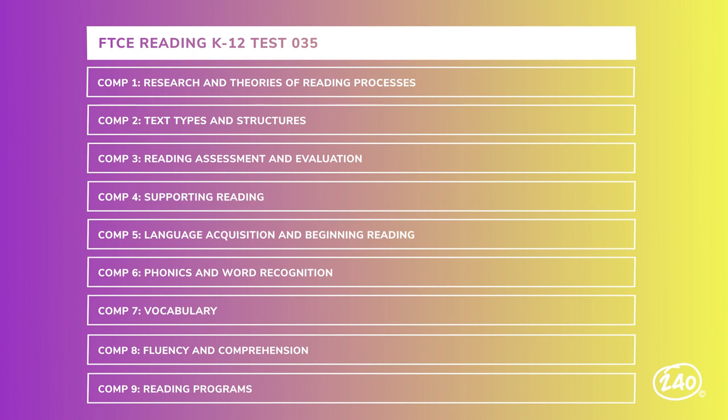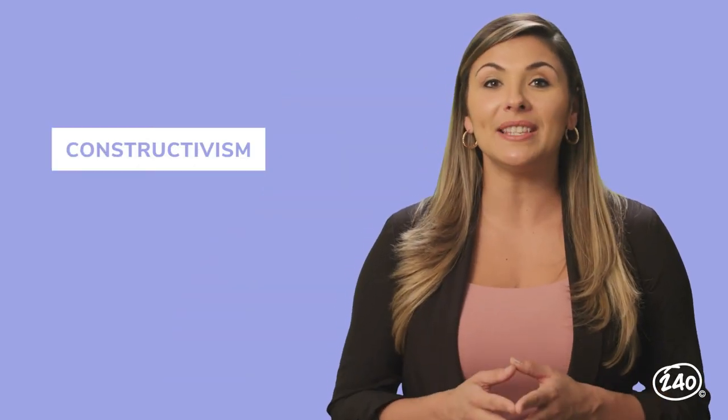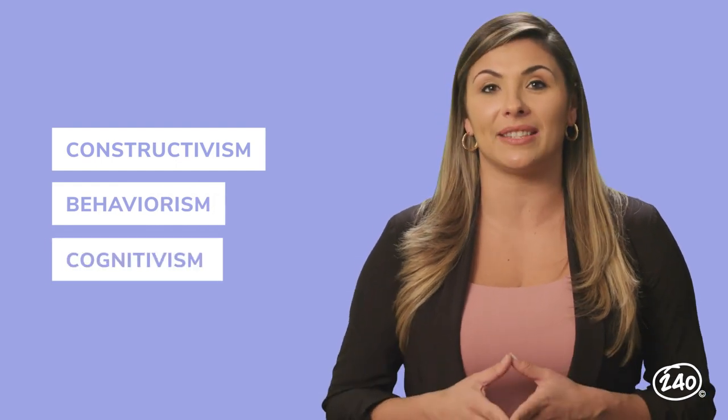Remember when I said I'd get back to Competency 1? It's time for research and theories of reading processes. This competency is worth 10% of your test — about 10 questions — so you can't afford to stop studying here. You'll need to know your learning theories. In the classroom, they help teachers troubleshoot challenges and provide a toolbox for encountering learning difficulties. There are three main learning theories: Constructivism, Behaviorism, and Cognitivism.